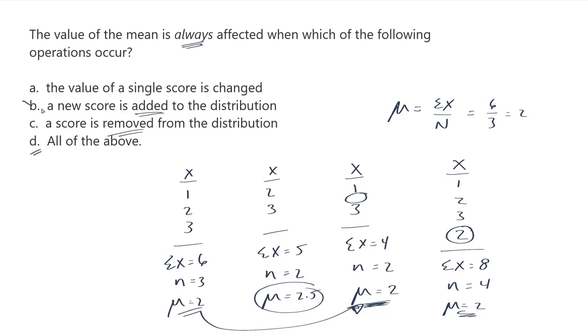So adding a score doesn't always change the mean. Removing a score doesn't always change the mean, so it can't be all of the above. The answer instead is when the value of a single score is changed. That doesn't mean added or removed, it means I change an actual value.